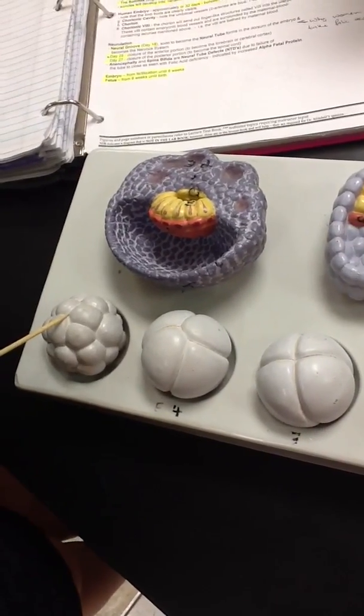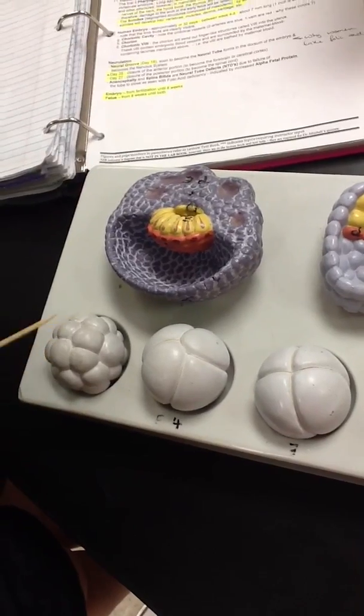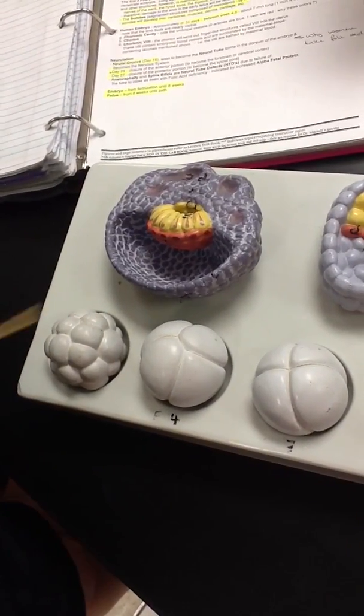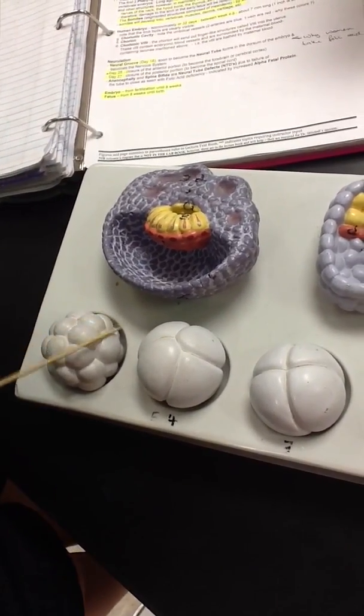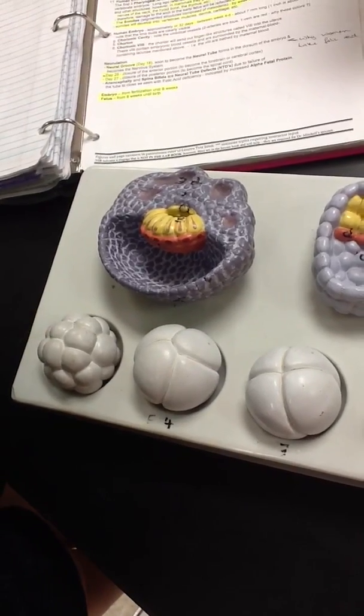This occurs around day 3 after fertilization. These are totipotent. Each cell has the potential to develop into a complete individual.